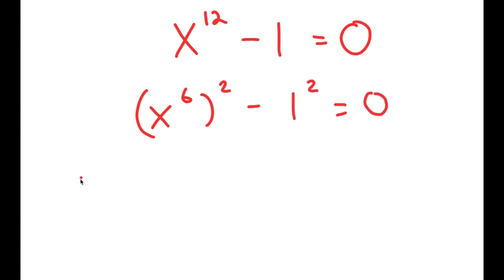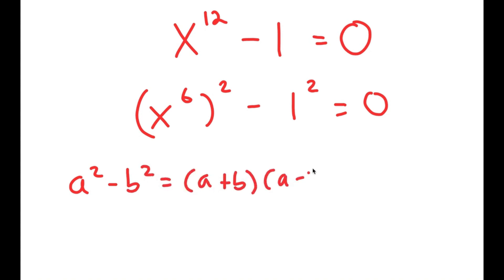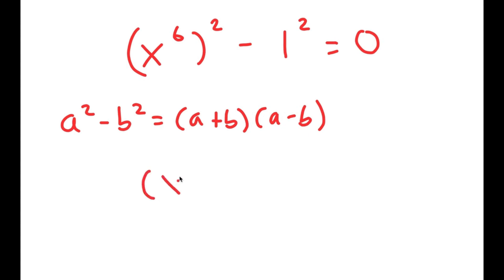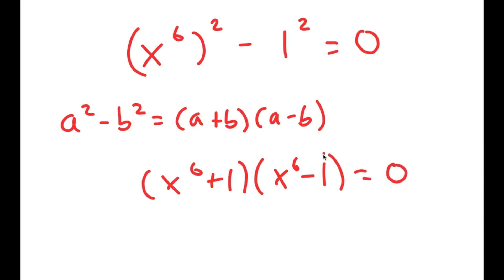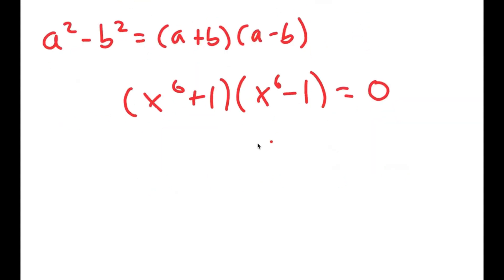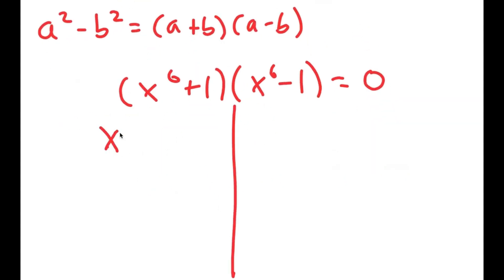The reason I'm doing this is so I can use the property a squared minus b squared equals a plus b times a minus b. So this turns into x to the power of 6 plus 1 times x to the power of 6 minus 1 is equal to 0, giving me two equations: x to the power of 6 plus 1 equals 0, and x to the power of 6 minus 1 equals 0.